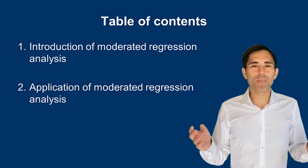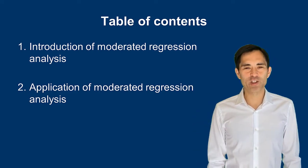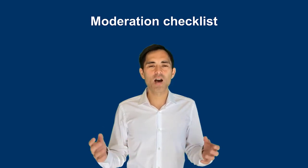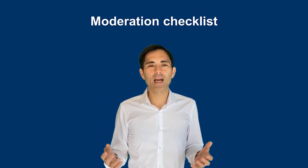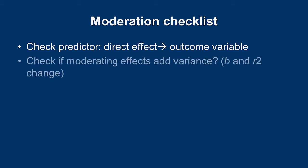So far I've talked about the background and assumptions of moderated regression analysis. Now let me talk about how to conduct one. There are many different statistical programs you can use — SPSS, R, Stata, and so forth. I'd like to give an overview of the basic understanding, and then you can apply it using the program you prefer. First, check that the assumptions are met. I recommend checking that the direct effect of the independent variable on the outcome is statistically significant. Then compare your baseline model — with your control and independent variables — against a model where you add the interaction term. It's very important that the new model, including the interaction term, adds variance, i.e., there is a significant R-square change.